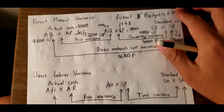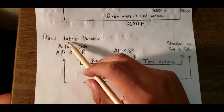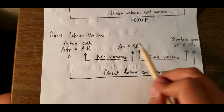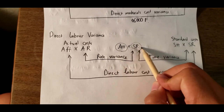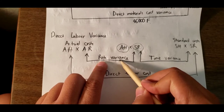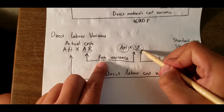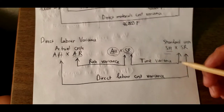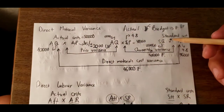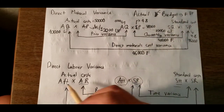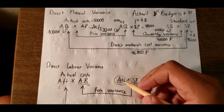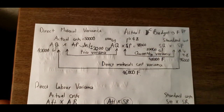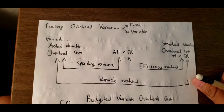The next topic is direct labor variance, which is similar to direct material variance. We still have actual cost and standard cost. Actual hours multiplied by standard rate gives the rate variance, which compares the difference between actual rate and standard rate. Time variance compares standard hours and actual hours. The formula is similar, so you just input actual hours, actual rate, standard rate, and standard hours from the budget.